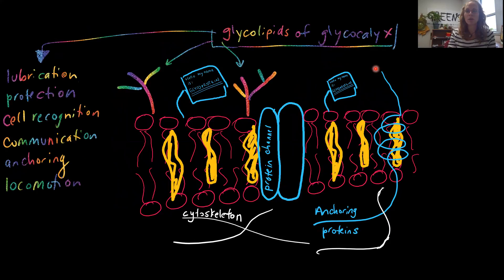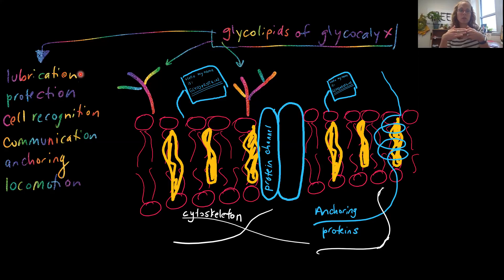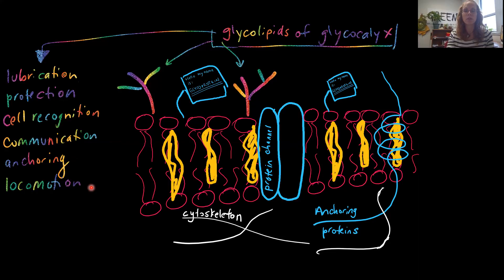The glycocalyx is usually composed of carbohydrates and lipids. We have the name glycolipid to refer to molecules hanging off the outside of our cell membrane. The glycocalyx has many jobs: lubrication — glycolipids reduce friction between cells; protection of the cell; cell recognition — not just glycoproteins but also glycolipids serve as name tags; communication; anchoring — how our cells connect to other cells to form tissues; and locomotion, or movement of the cell.